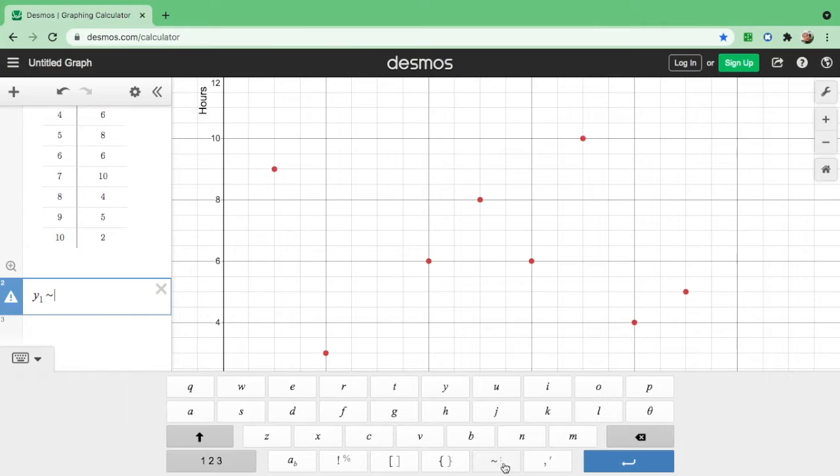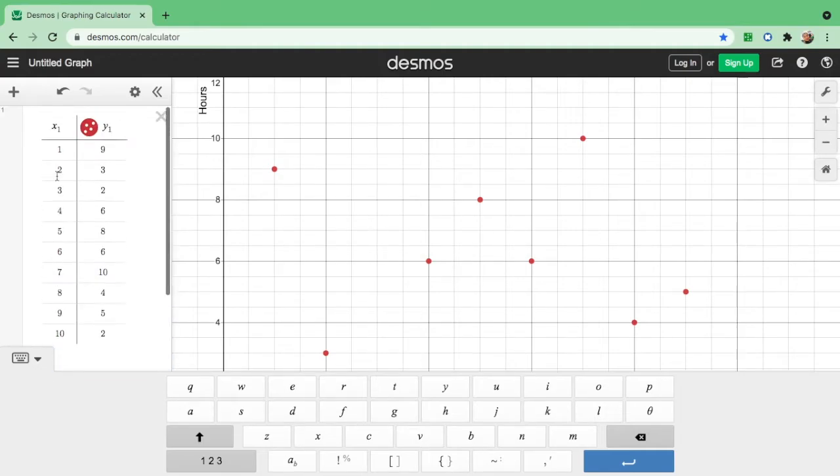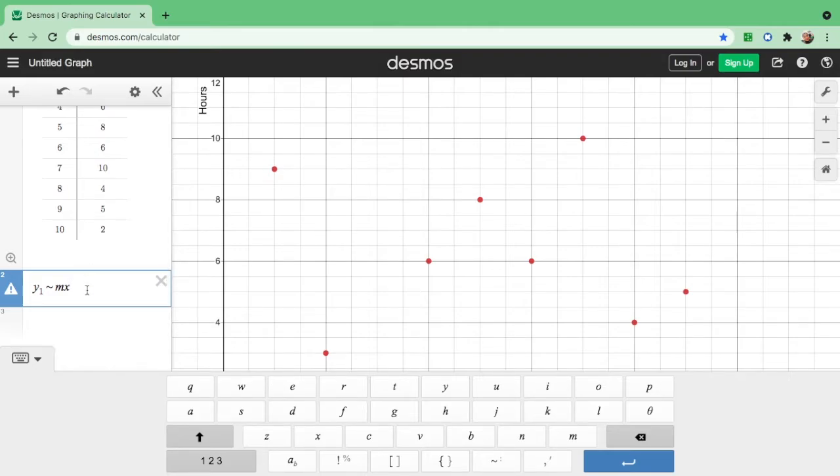Let us find. And here is the tilde symbol. So if you don't want to use the shortcut on your keyboard, just use the keyboard on Desmos. And you know that the equation is y equals mx plus b, so this will be m, and your x, since we are using x1 and y1, so this will be x. Again, shift underscore 1, and then plus b.